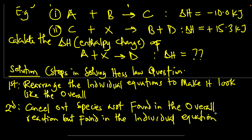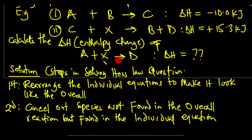The sole aim of rearranging is to make the individual equations look like the overall equation. At the end, we cancel out species not present in the overall reaction. For instance, if the overall equation is A + X → D, then C and B appear in the individual equations but not in the overall equation, so they must be cancelled out. Only A, X, and D should remain.